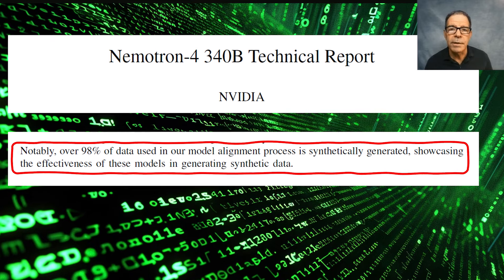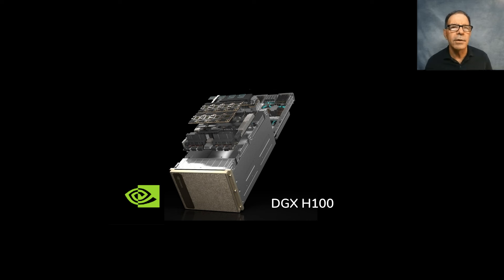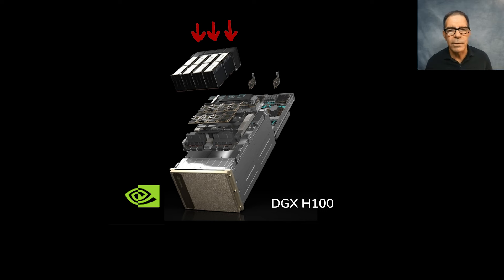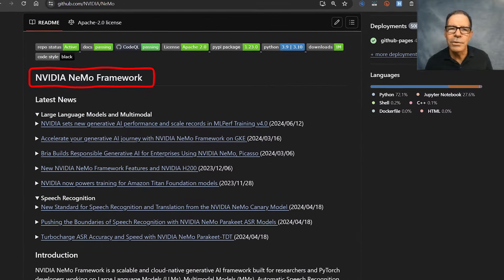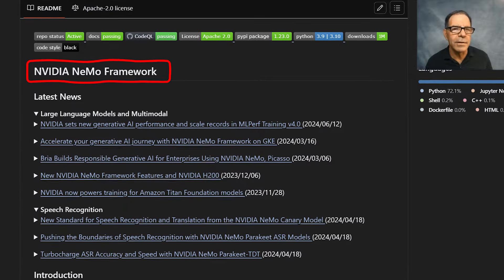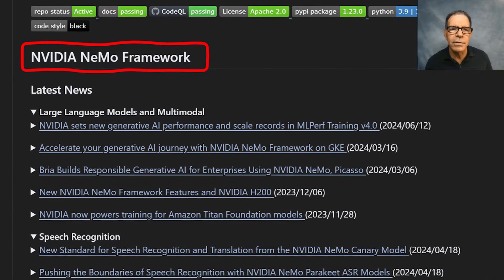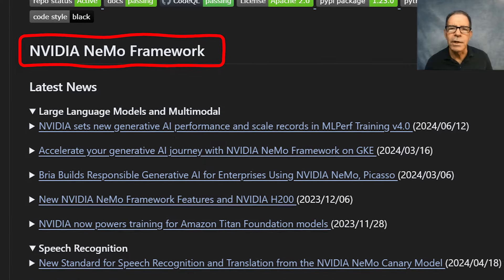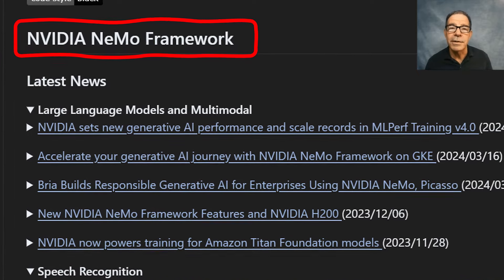We also know from the announcement that the new models are sized to work on a single DGX H100 with 8 GPUs if they're deployed in FP8 precision. But training can be scaled up to thousands of GPUs if desired. And of course, the models work with NVIDIA Nemo, which is an open source framework for end-to-end model training — starting with synthetic data generation and data curation, right through to customization, model tuning, and final evaluation.